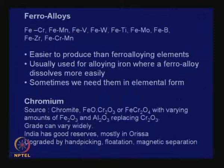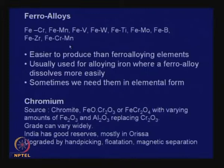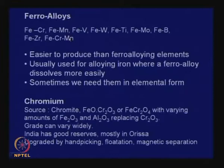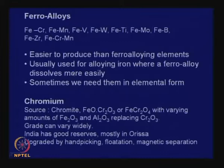Let us go back to a slide shown earlier. These are the common ferro-alloys: ferro-chromium, ferro-manganese, ferro-vanadium, ferro-tungsten, ferro-molybdenum, ferro-boron, ferro-zirconium. We want these ferro-alloys because ferro-alloying elements are required for alloying of steel. It is easier to produce them in ferro-alloy form and then add to steel — they will also mix very quickly, which is the advantage of producing them as ferro-alloys.